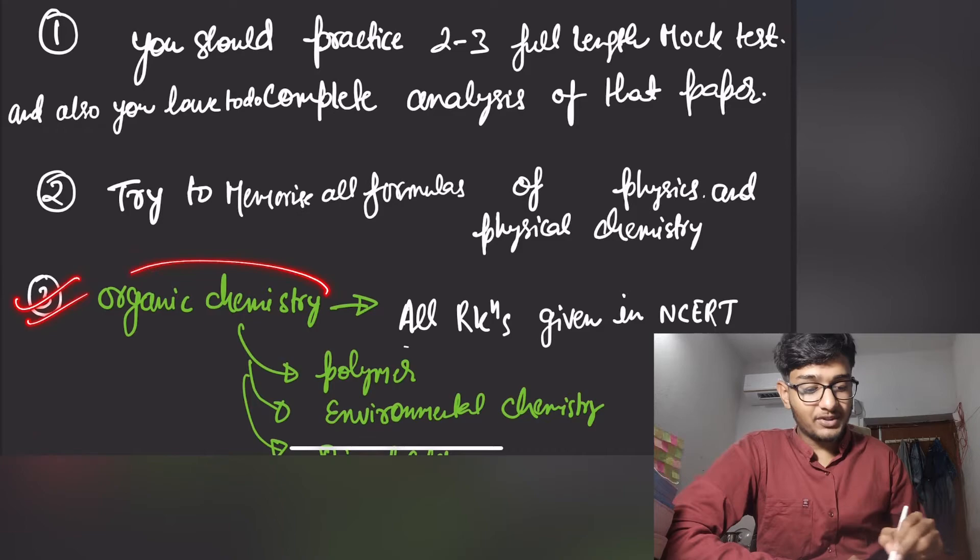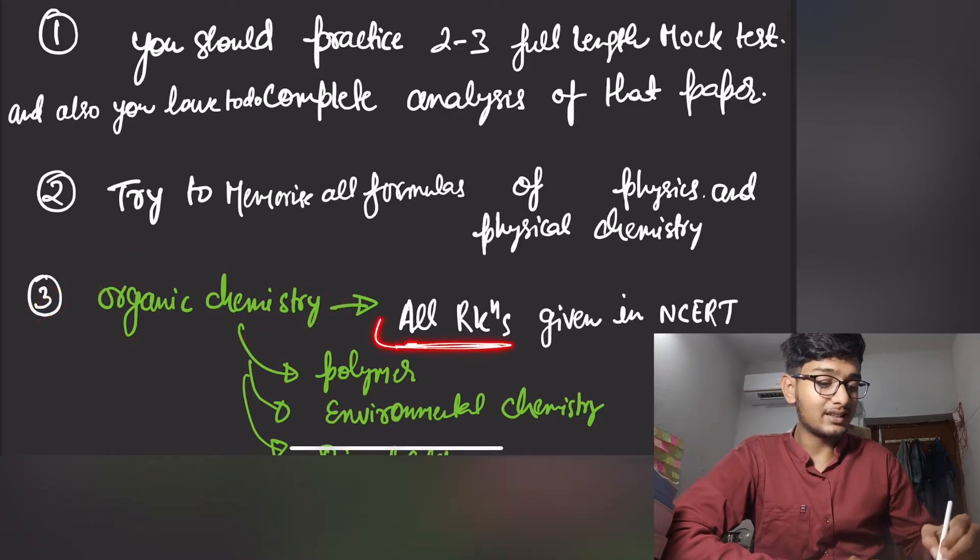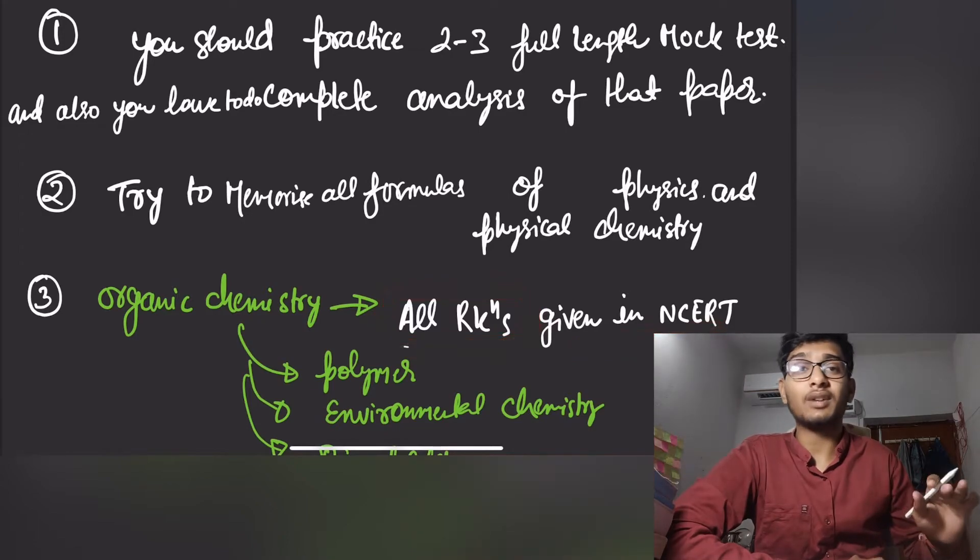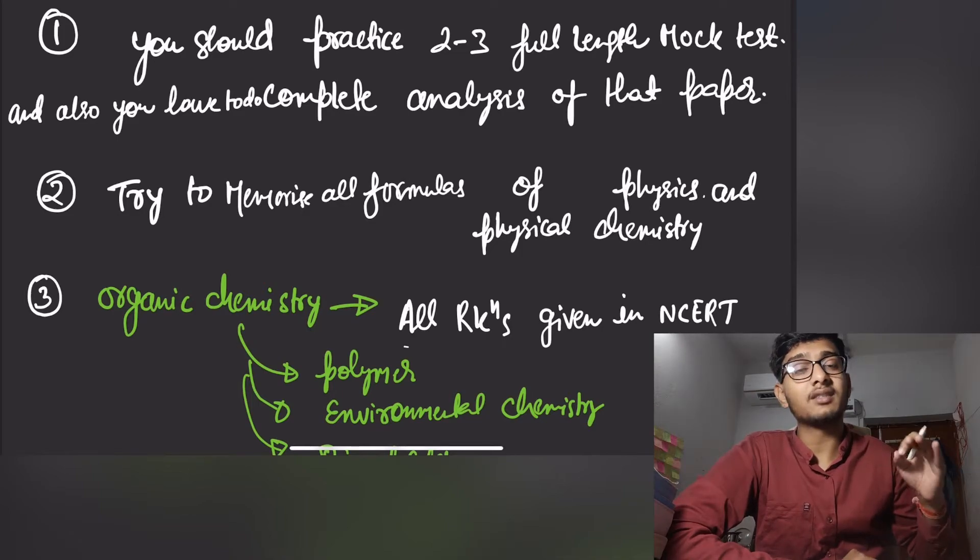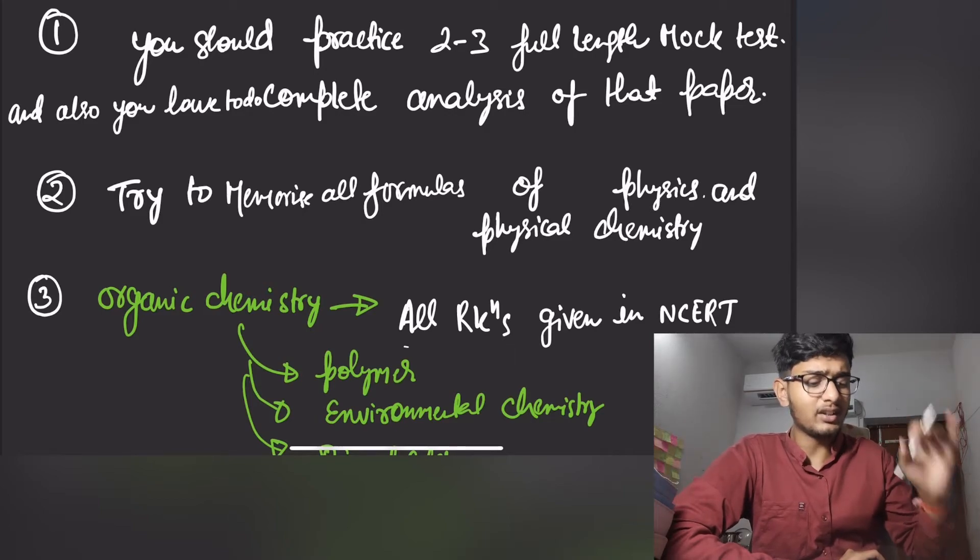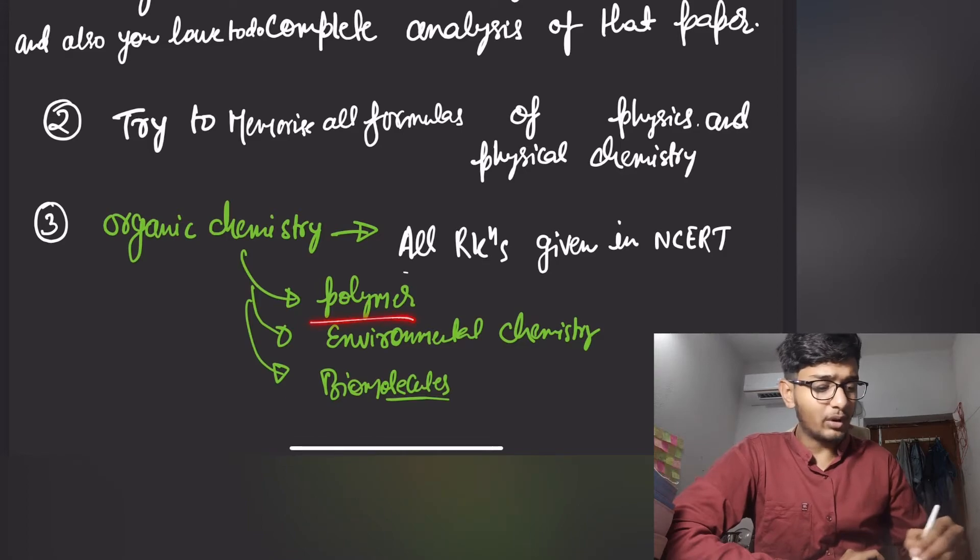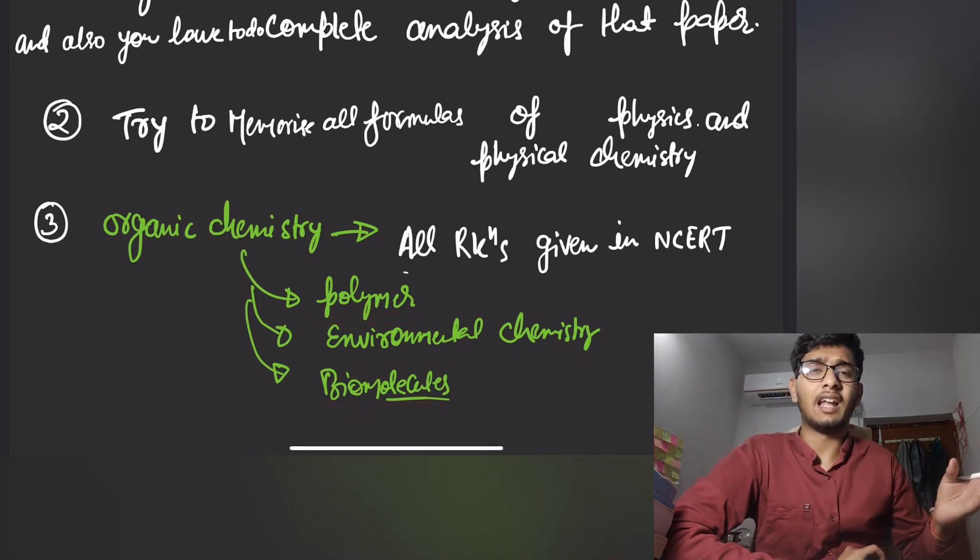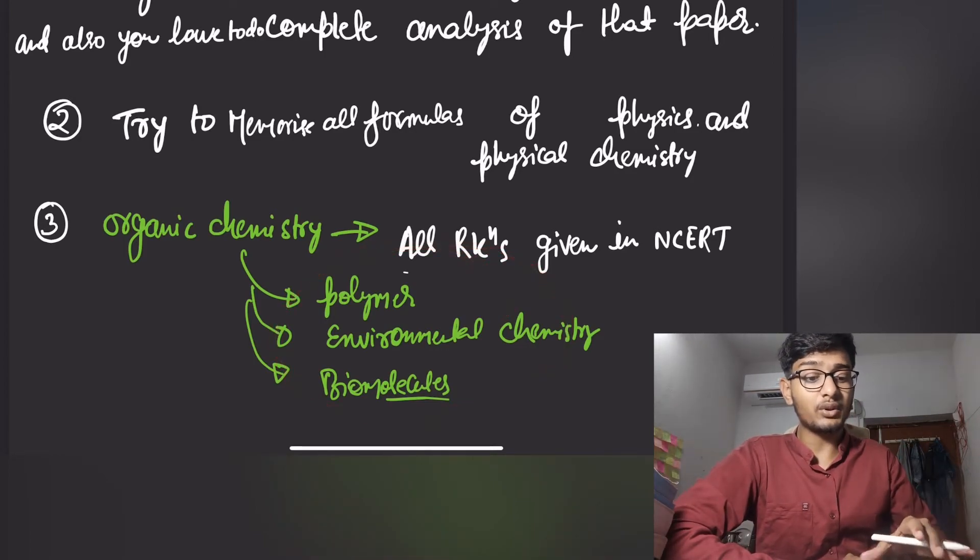The third one is for organic chemistry. Just memorize all reactions given in the NCERT. You have to keep all reactions of organic chemistry in your mind before going to the examination. Also, you have to read polymer, environmental chemistry, biomolecules, and chemistry in everyday life. Just try to read these chapters because these are very scoring chapters.